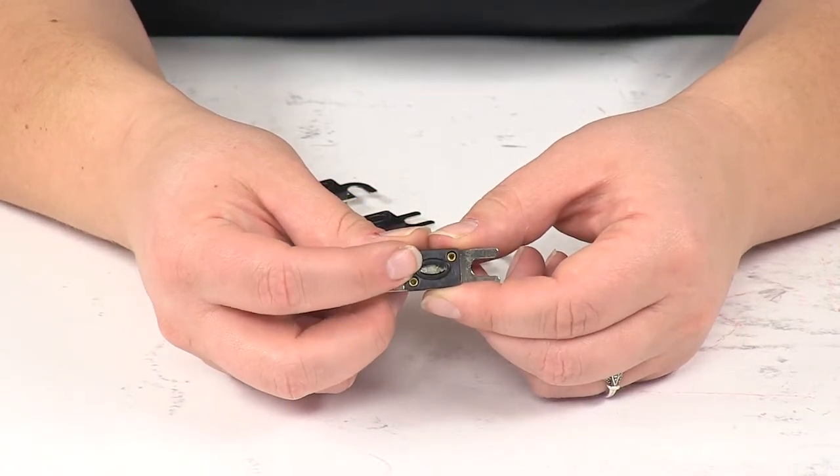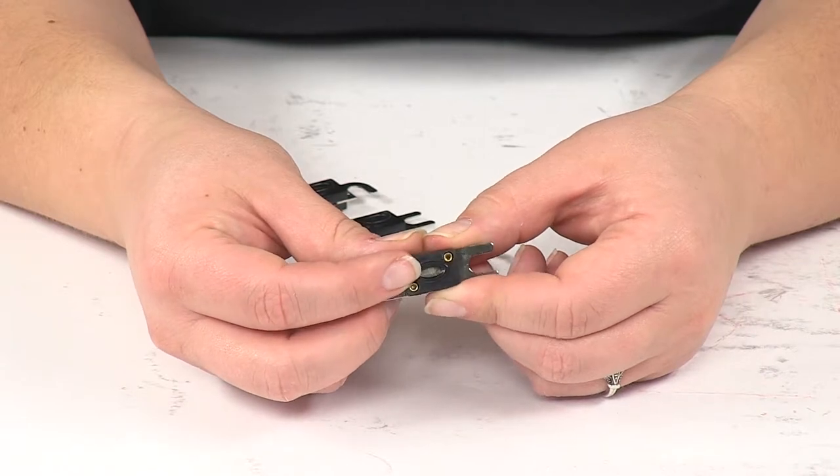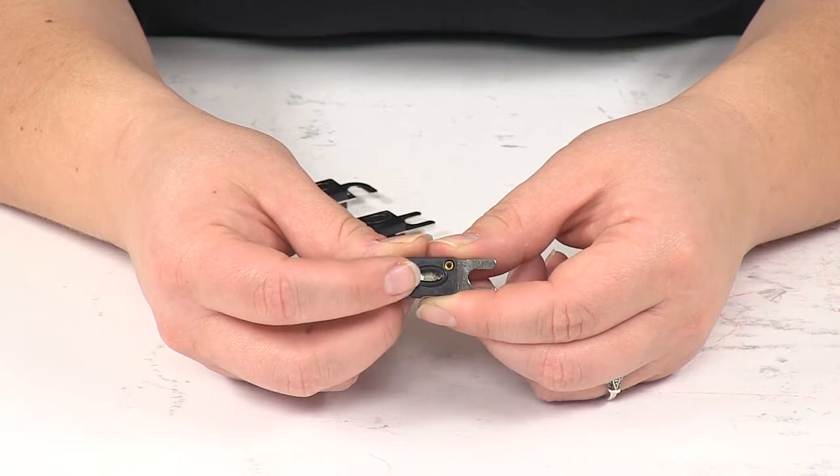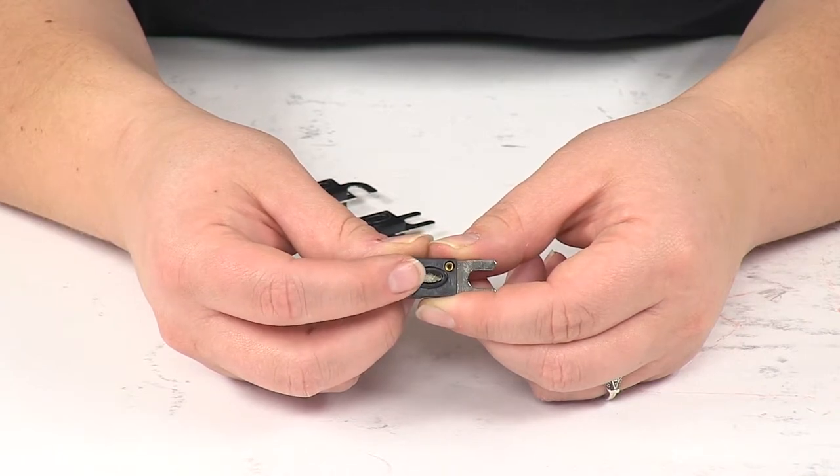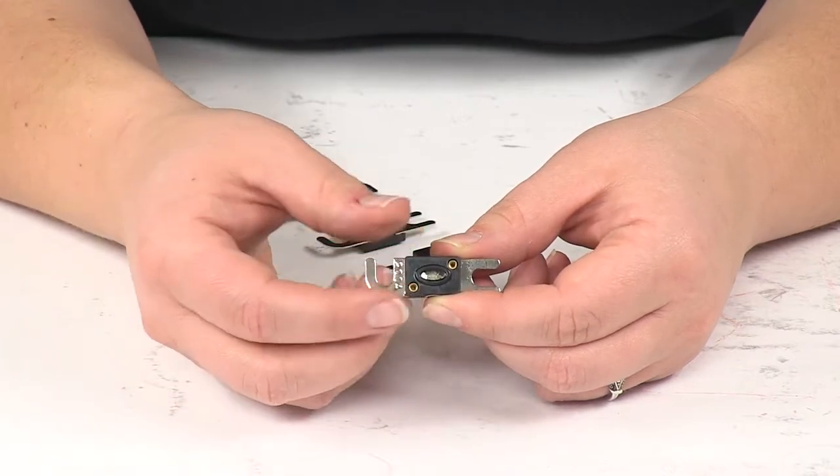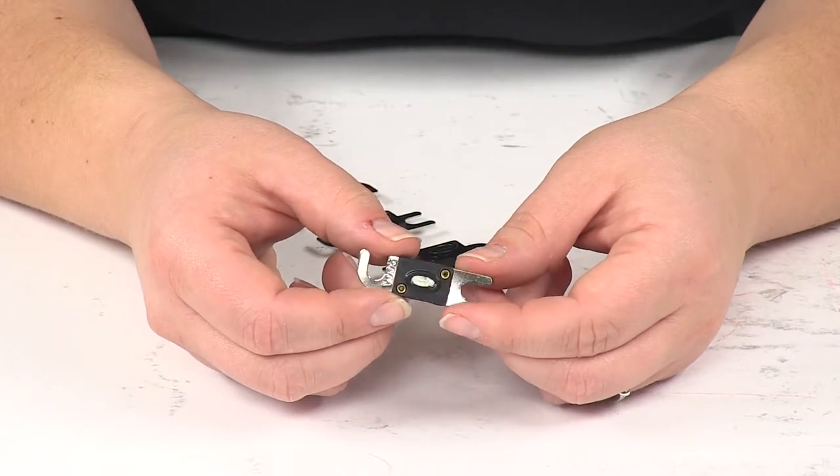You can also see into the fuse itself. There's that little window there on the front of the fuse. That's going to be the indicator that lets us know if the connector blade has separated and that would indicate that we need to replace our fuse with a new one.